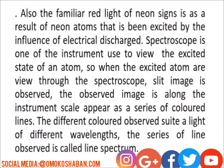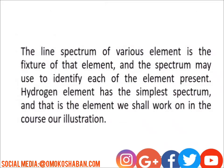Spectroscopy is one of the instruments used to view the excited state of an atom. When the excited atoms are viewed through a spectroscope, a light image is observed. The observed images along the instrument scale appear as a series of colored lines. The different colors observed correspond to light of different wavelengths. The series of lines observed is called a line spectrum. The line spectrum of various elements is a feature of that element, and it may be used to identify each element present.